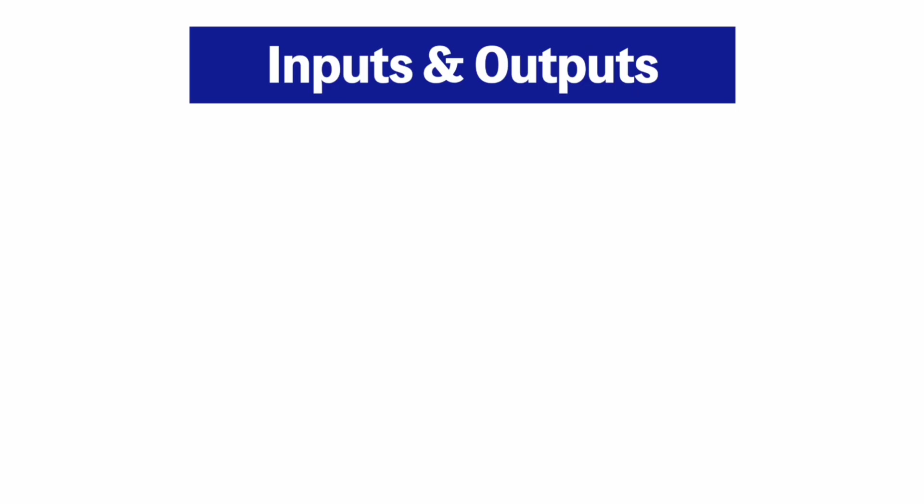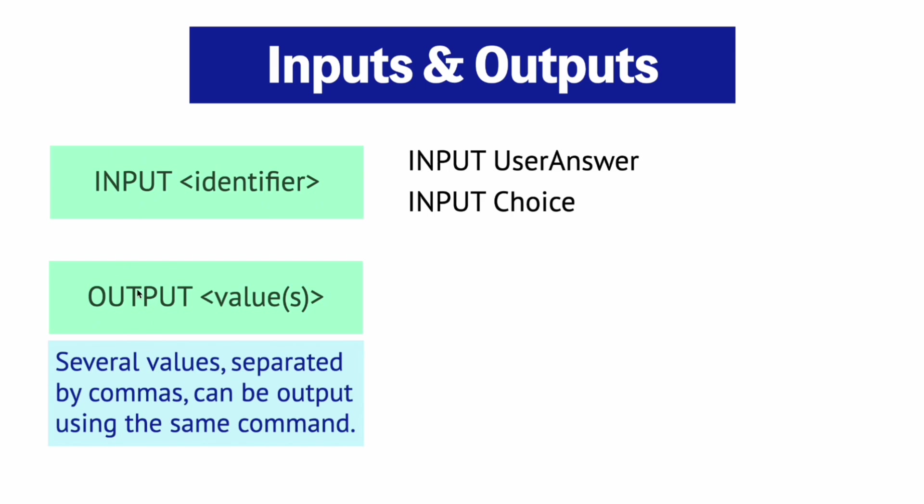To get a user to input a value into a variable you need to use the INPUT keyword followed by the name of the variable that you want to store their input in. As for outputting the contents of a variable, the OUTPUT keyword is used along with the name of the variable, but you can also output other things such as strings and numbers. If you want to output more than one value on the same line you can use a comma to show that these are all part of the same output statement.